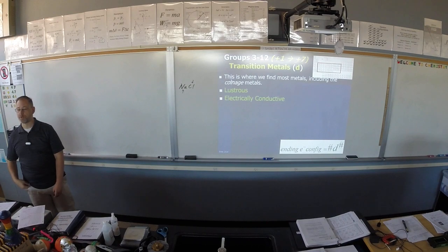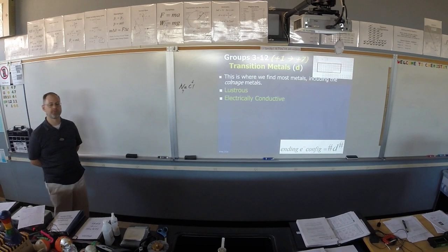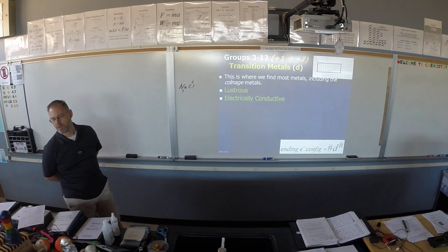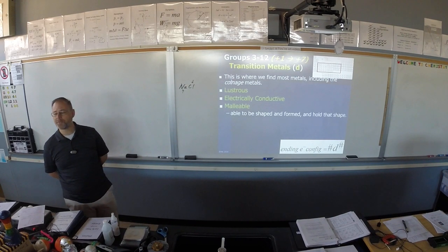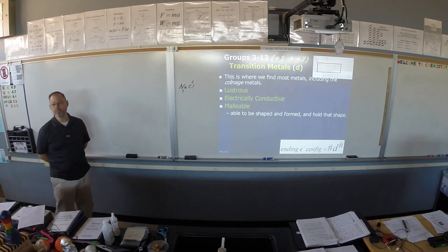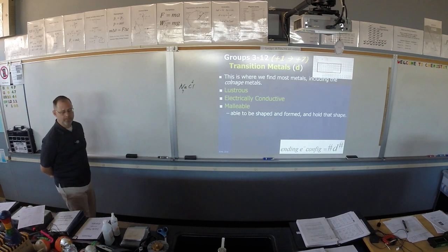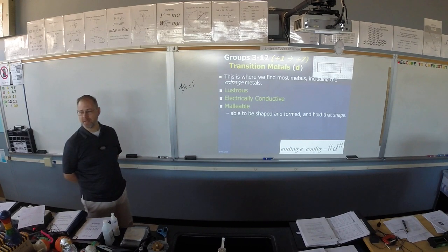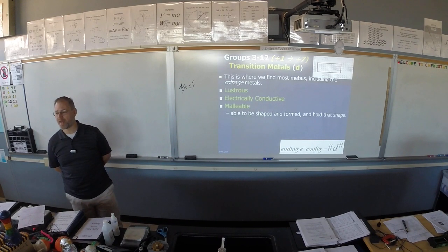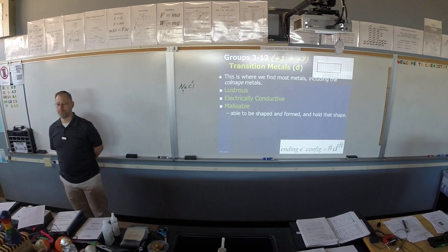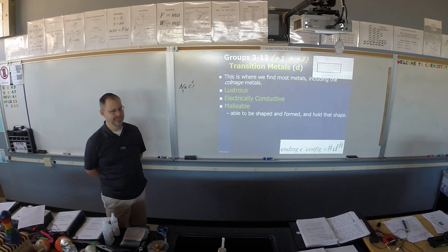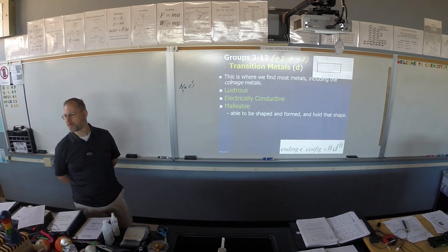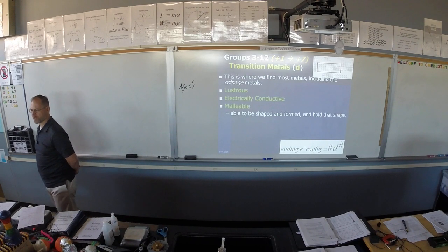Because gold is so expensive we usually make wires out of copper, which makes really good wires with very low electrical resistance. Transition metals are malleable — you can bang them into a shape and they will hold that shape. Malleable is also a fun word to use in daily vocabulary: if somebody is easily influenced, you can say they are malleable.